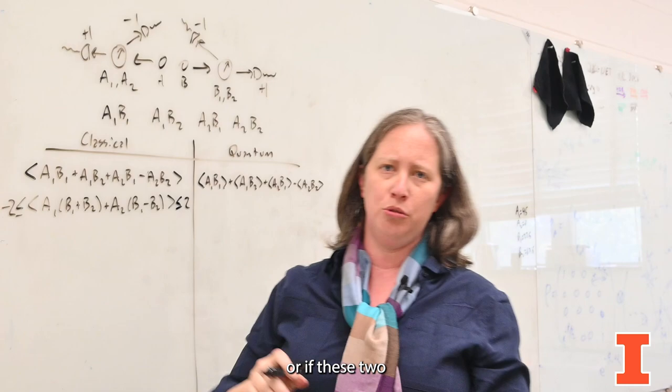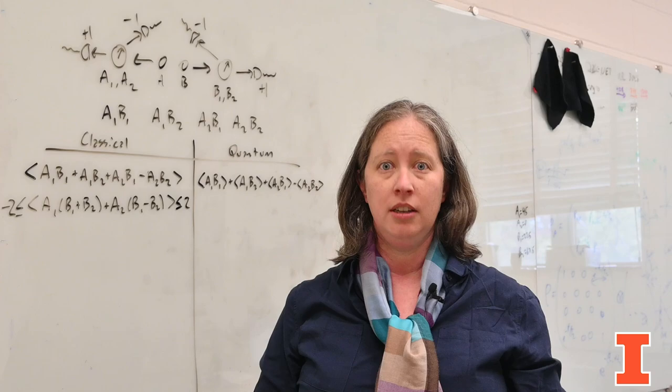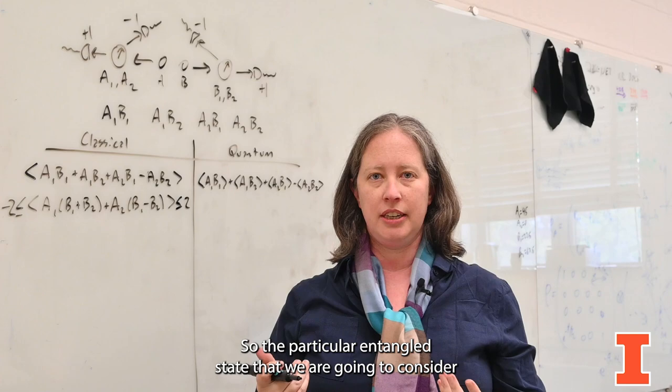Now on the quantum mechanical side, it turns out if I only had one photon, or if these two were just photons that were independent and didn't know about each other, there's no way that I can violate these bounds. But it turns out there's something called an entangled state in quantum mechanics, and we can write down particular entangled states of photons where quantum mechanics predicts a different outcome.